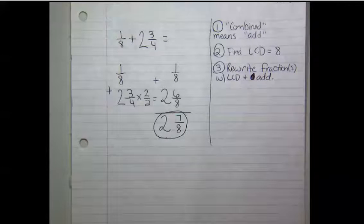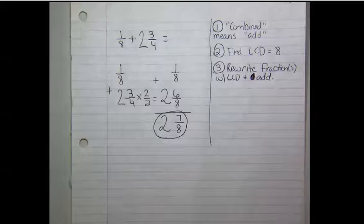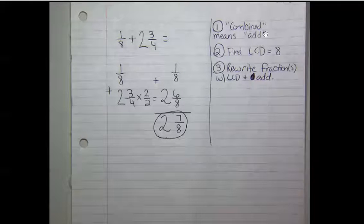Here are my notes. In the original problem, it said in February, the amount of snowfall was one-eighth feet. In January, the amount of snowfall was two and three-fourths feet. And it wants to know what's the amount of snowfall in the two months combined. That key word combined tells us that we're going to add these two numbers.